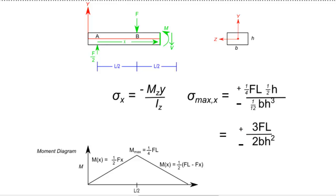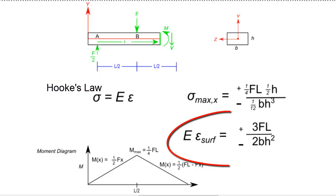One way this stress can be experimentally determined is to mount strain gauges to the surface of this beam. Then, we can use Hooke's Law to relate the recorded surface strain to the applied load and specimen properties.